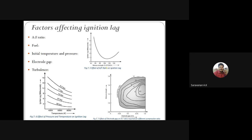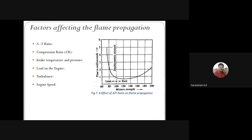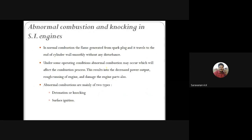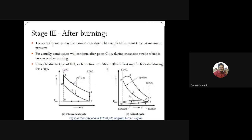There are five factors affecting the ignition lag and six factors affecting flame propagation, which will be covered along with abnormal combustion and the knocking process in the next class.